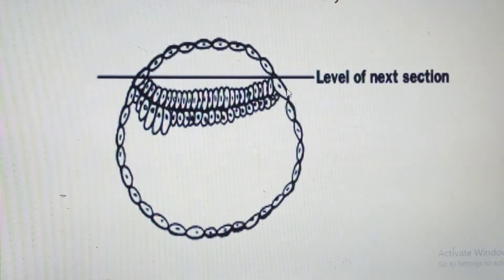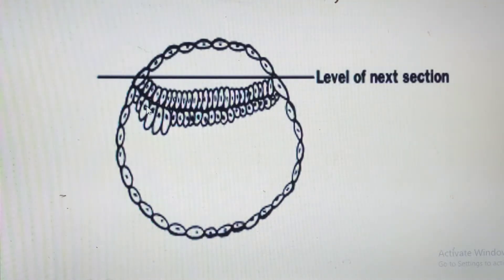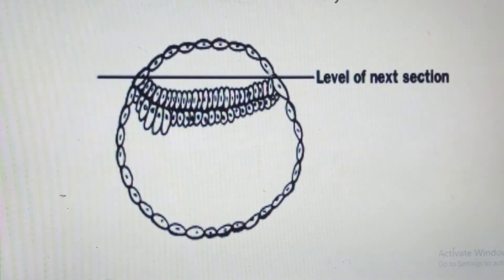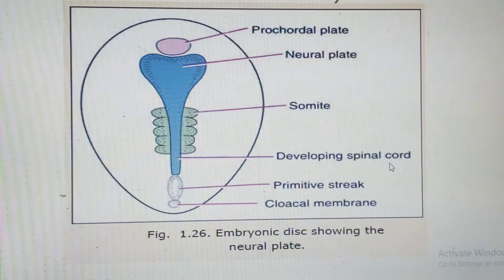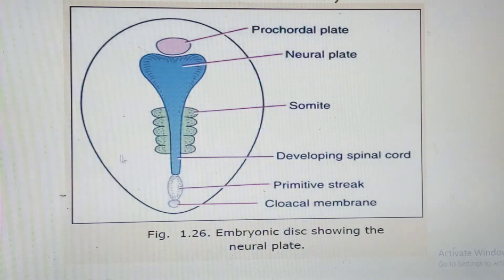These elongated cells form what we call the prochordal plate, which eventually becomes the future mouth. The prochordal plate is the first feature of the embryonic disc that determines the cranio-caudal axis — this side is the cranial end, the opposite is the caudal end. From a superior view, the embryonic disc is broader at the cranial end and narrower at the caudal end, with the prochordal plate visible at the head end.